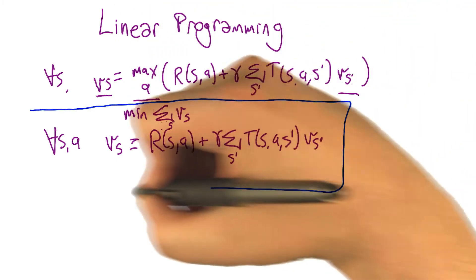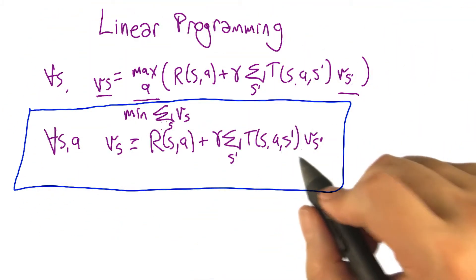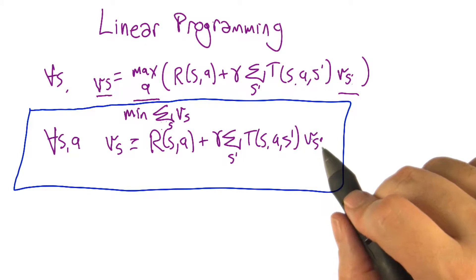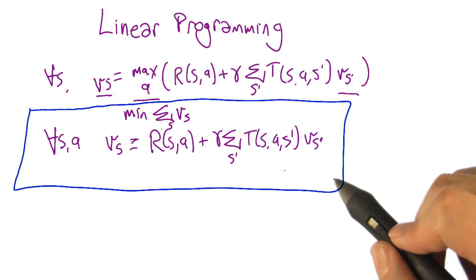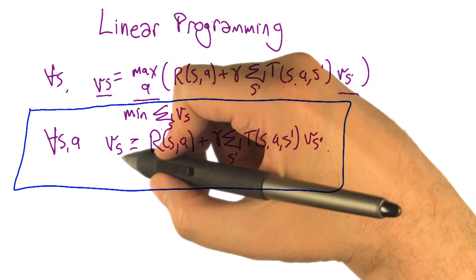So this actually is a linear program that is the solution to which is equivalent to the solution to the MDP. So we can just write down this linear program, give it to a linear program solver that runs in polynomial time, and boom, we get our values V sub S.